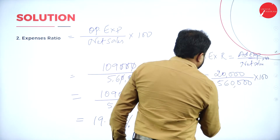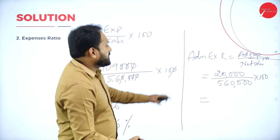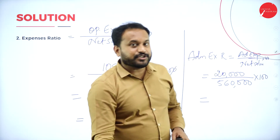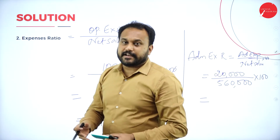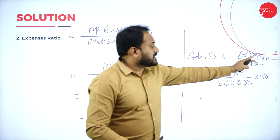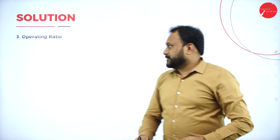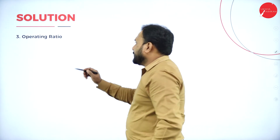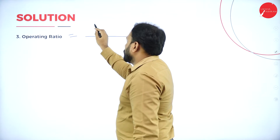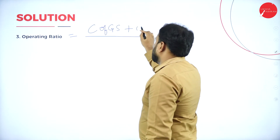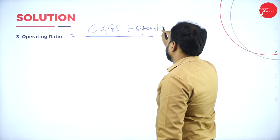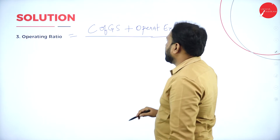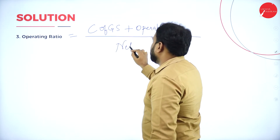For operating ratio, the formula is: cost of goods sold plus operating expenses, divided by net sales into 100. Please watch the last session for more on how to calculate operating ratio. Cost of goods sold equals opening stock plus purchases plus wages minus closing stock.